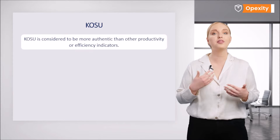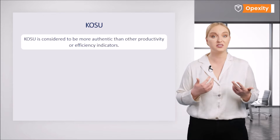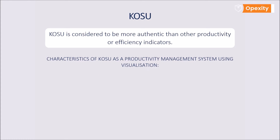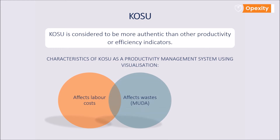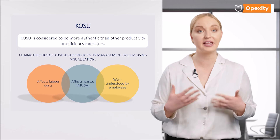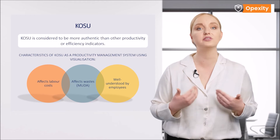Kosu is considered to be more authentic than other productivity or efficiency indicators. This is owing to the fact that Kosu gives a better idea of the labor costs — after all, the man second or man hour is a well-understood unit in this aspect. In addition, this indicator enables a better understanding of the correlation between performance output and the losses that reduce it. Therefore, it strongly highlights wastes. Employees can better understand the objectives to be achieved in Kosu, as an objective must be defined. This is all related to the removal of problems and anomalies rather than manufacturing a greater quantity of goods over time.